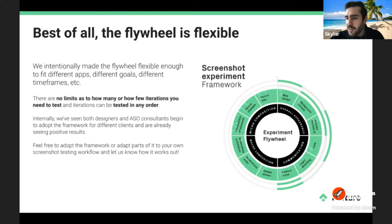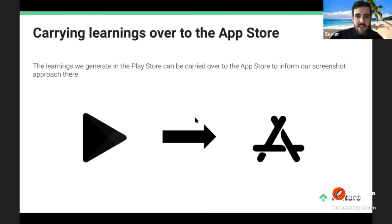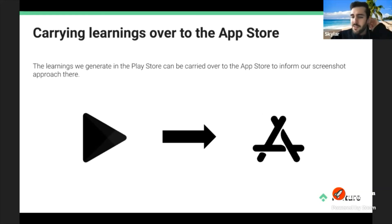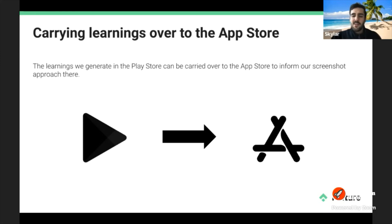Question: Do you use the same design for iOS and Android, or are there major differences to consider? We do like to carry over learnings directionally, but there are loads of differences between the two stores — differences between Android and iPhone users, how they interact with their phones and app stores. Even when porting learnings from Google Play to the App Store, we still want to test — either checking conversion rates after implementation or using Apple Search Ads to test.